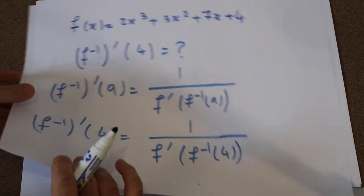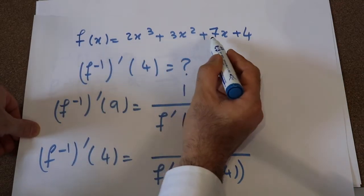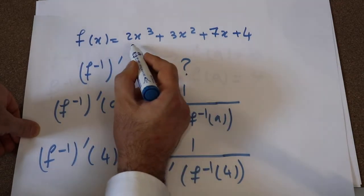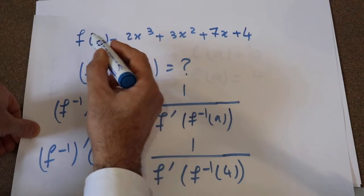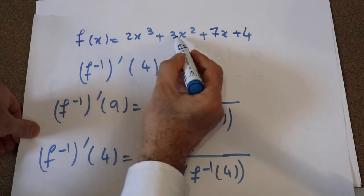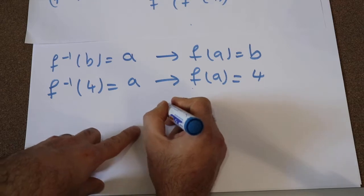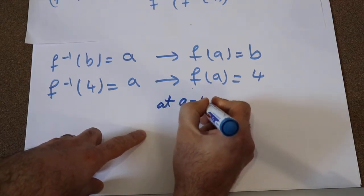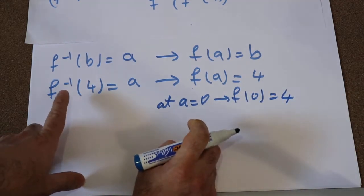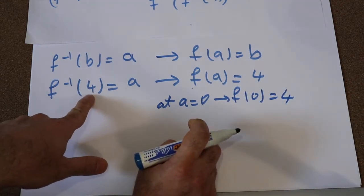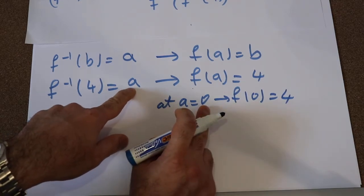If you look at the original equation, f is defined as 2x³ plus 3x² plus 7x plus 4. You can easily see that at x equal to 0, the function f is equal to 4, because 0 plus 0 plus 0 plus 4 is equal to 4. So at A equal to 0, f(0) is equal to 4. Therefore, the inverse of this function at point 4 is equal to 0.